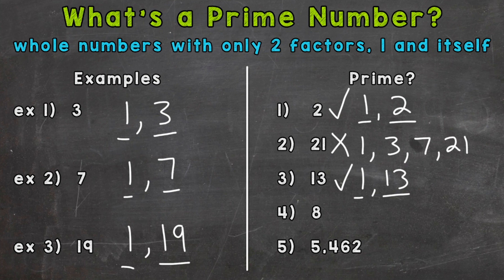Next, we have eight. We know one and eight are factors, but also two and four can go into eight. Two times four equals eight, so two and four are factors. We have more than two factors there. So eight is composite. It is not prime.